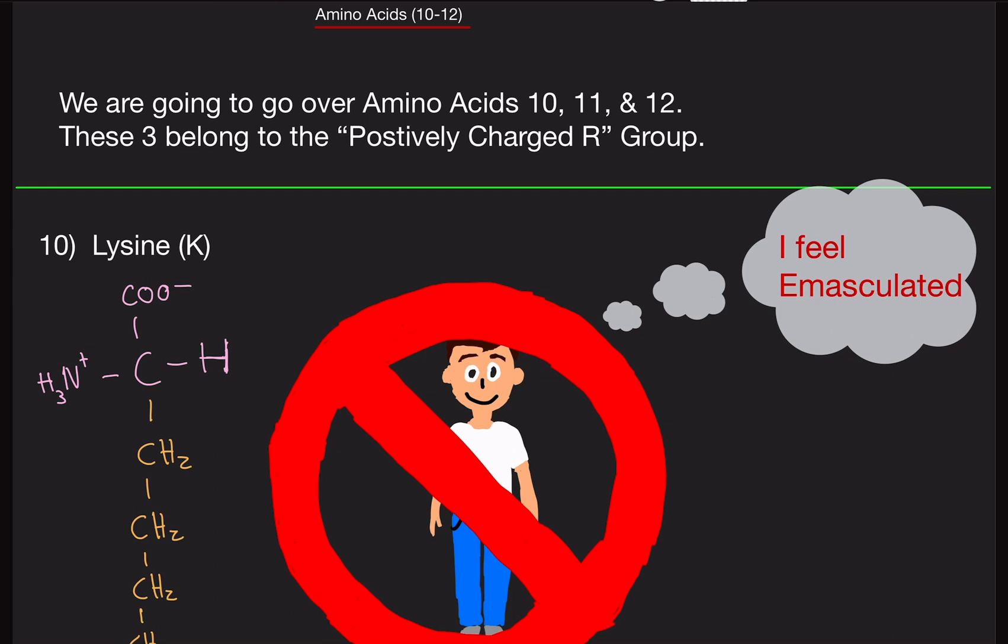All right, welcome back. In this video we're going to go over amino acids 10, 11, and 12. These are known as the positively charged R groups.